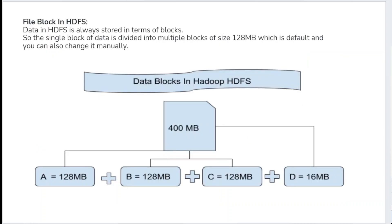Let's see how data blocks work in Hadoop HDFS. If I have a 500 MB file, I need to break it into blocks. Previously the minimum block size was 64 MB, but now it's increased to 128 MB, and in future it may rise to 256 MB. So the file splits into 128 MB, 128 MB, 128 MB, and a final block of only 16 MB — only the actual data size is allocated for the last block, not the full 128 MB, to avoid wasting space.